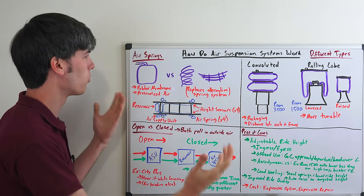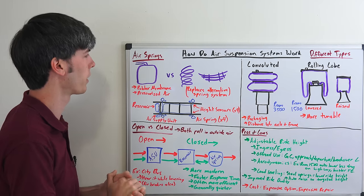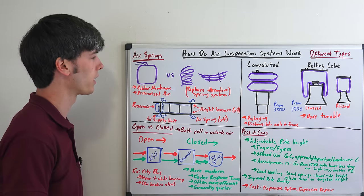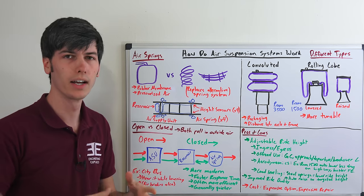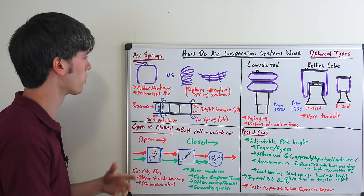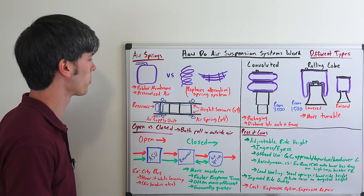So getting started, what is an air suspension system? Essentially the most basic aspect is what you're doing is you're replacing steel springs or leaf springs with an air spring. These airbags are rubber membranes that hold pressurized air and that pressurized air is what your vehicle is riding on. In the most basic form you're just swapping out the springs for air springs.